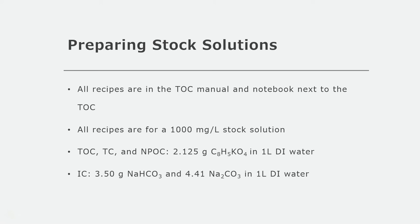These stock solution recipes are for 1,000 mg per liter solutions that can be diluted for your calibration curve. To make the stock for TOC, TC, and NPOC, you'll dissolve 2.125 grams of potassium hydrogen phthalate in 1 liter of DI water. And for inorganic carbon, you will dissolve 3.5 grams of sodium bicarbonate and 4.41 grams of sodium carbonate in 1 liter of DI water.